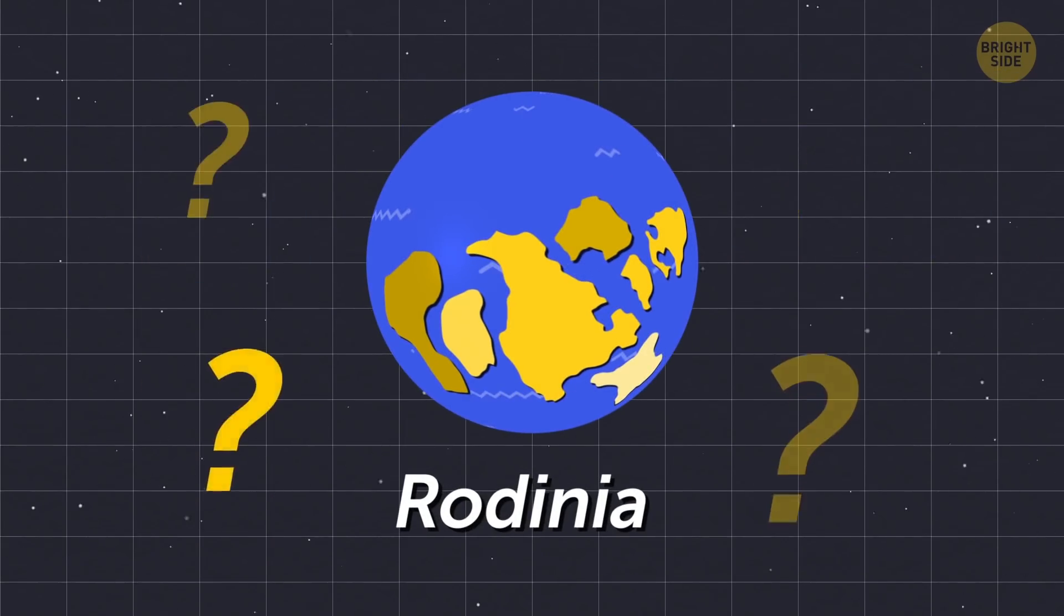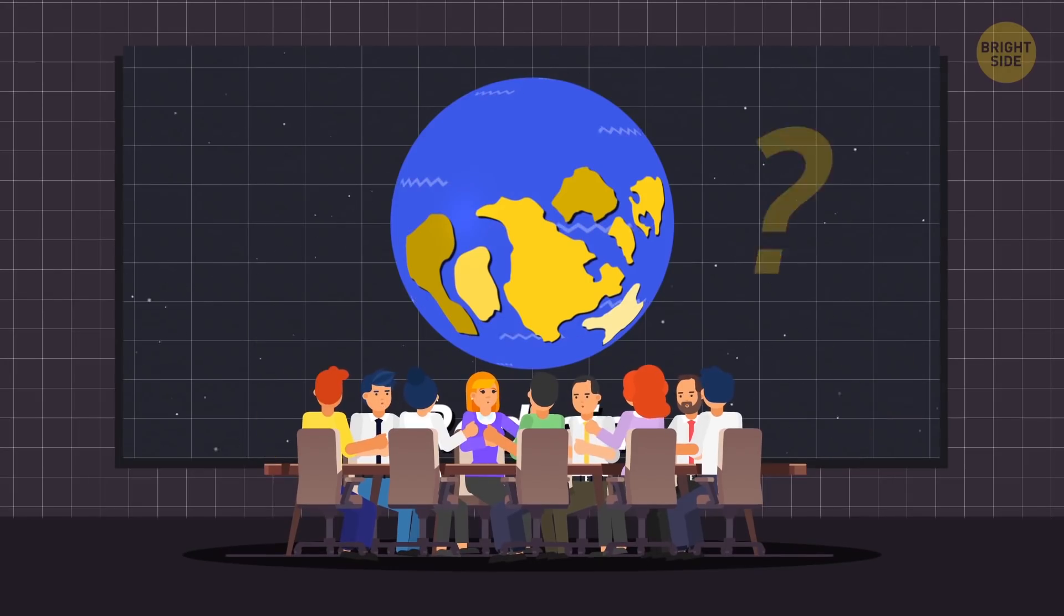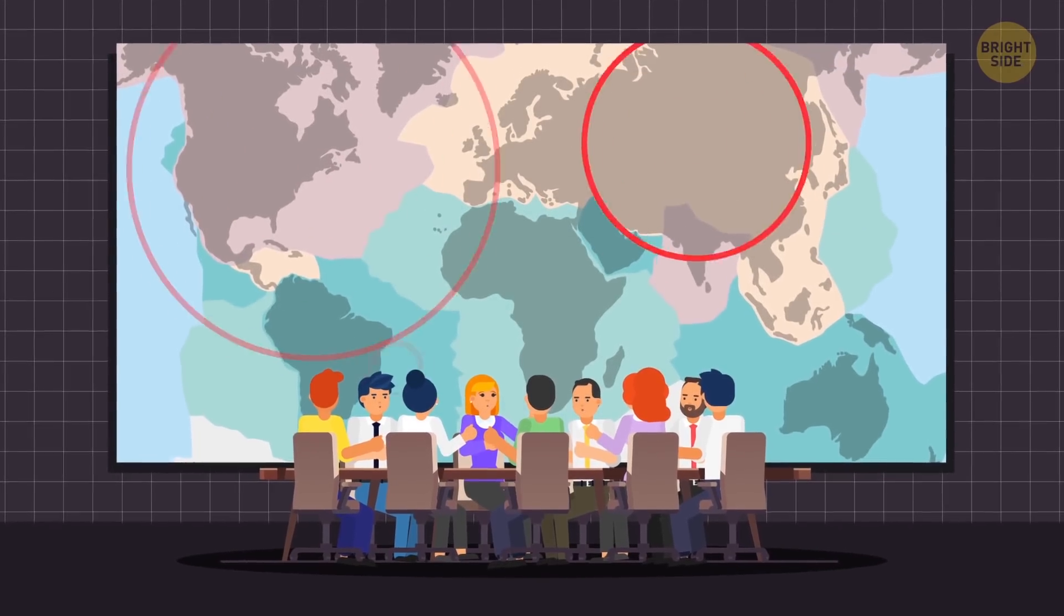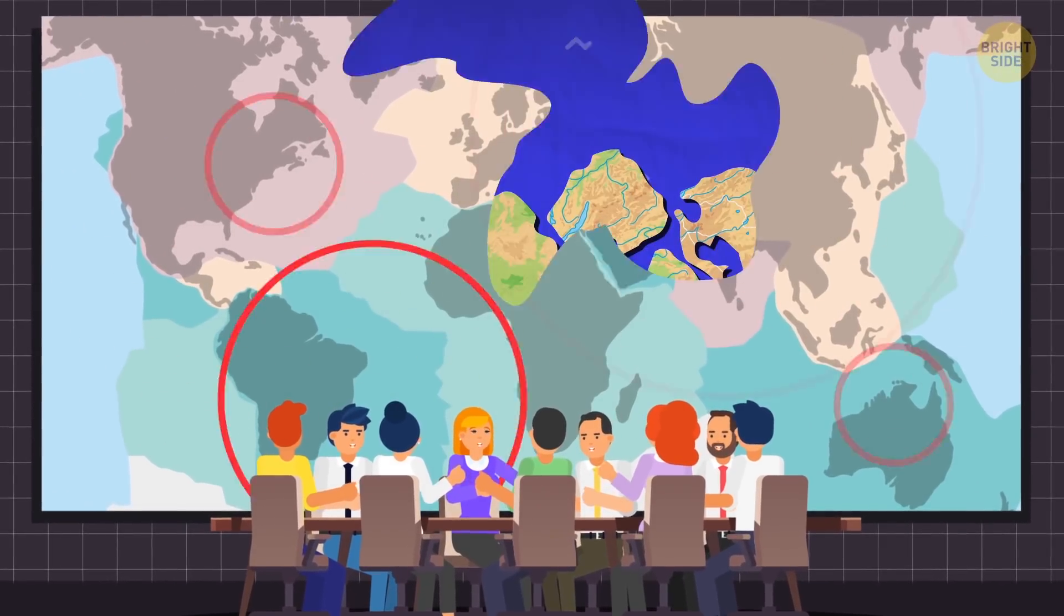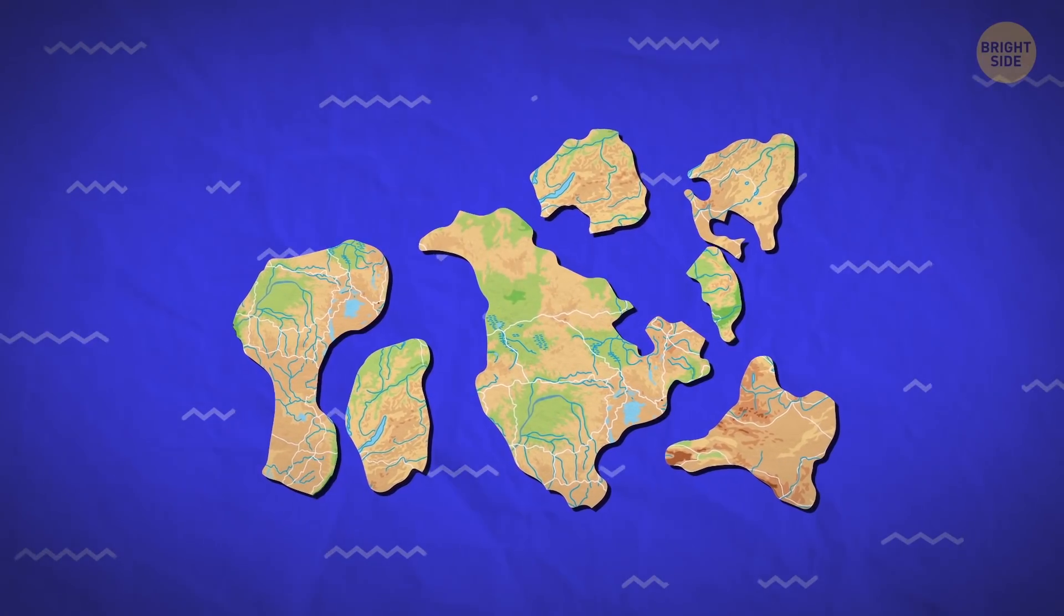There isn't much information about the position where Rodinia formed. But geologists are constantly finding new clues on its original location around the globe. As the time went on, Rodinia began to split.